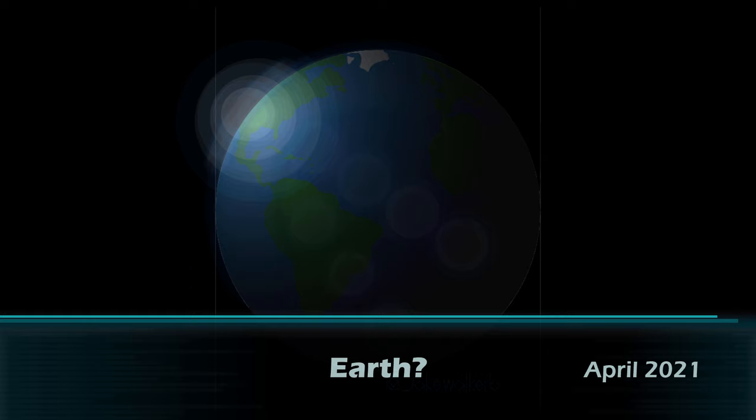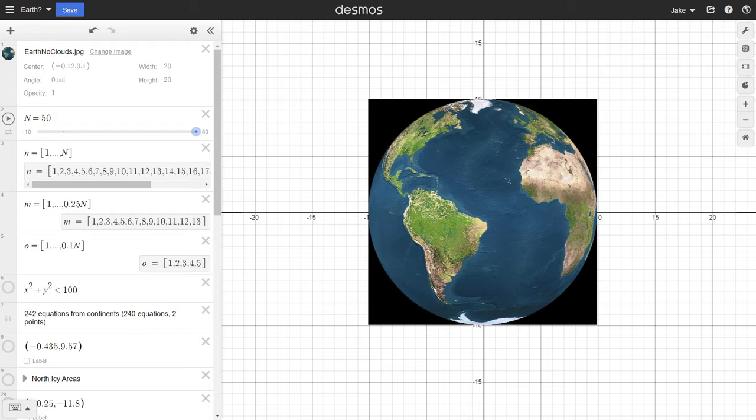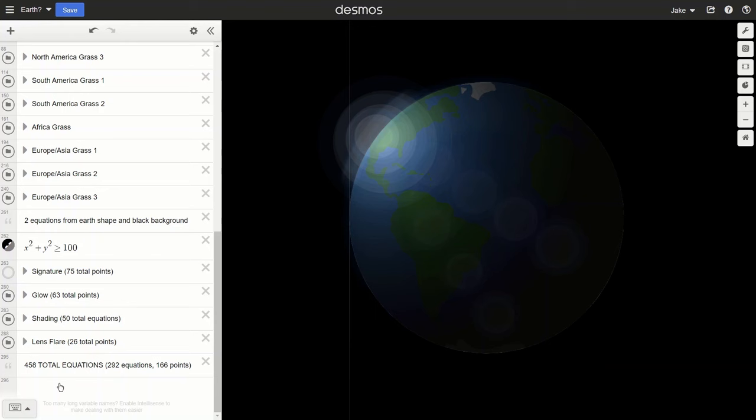This was the very first art graph I ever saved to my account and was made over the course of about a week or so. I used a reference picture of the earth and traced over it using circles. It wasn't originally supposed to have shading and glow, but I added it afterward, as well as a lens flare made out of points.